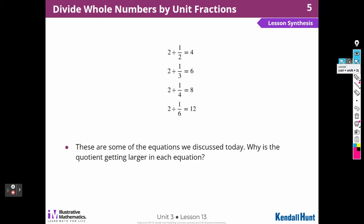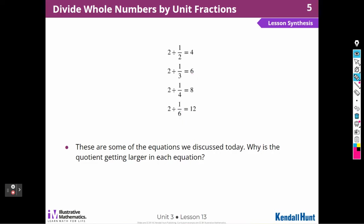These are some of the equations we discussed today. Why is the quotient getting larger in each one? It's getting larger because here I'm cutting two feet into two pieces per foot — cutting in half — so I'm going to get four pieces. The smaller I cut, the larger the number of pieces. Here I'm going to be cutting each foot into six pieces, so I'm going to get 12. So it's going to get larger and larger. And 3 ÷ (1/6) = 18 because I am cutting three feet into smaller pieces instead of two, so I'm going to get more pieces.